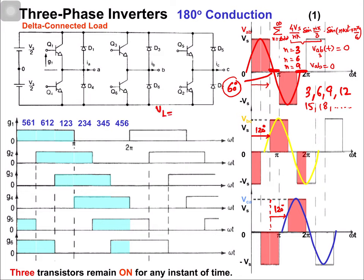The same was the case for the Y connected load: triplen harmonics are absent in both line and phase voltages. In the case of Y connected load, the line voltage is related to the phase voltage by the standard expression, but triplens are absent when operating these inverters in 180 degree configuration with 50 percent duty cycle.